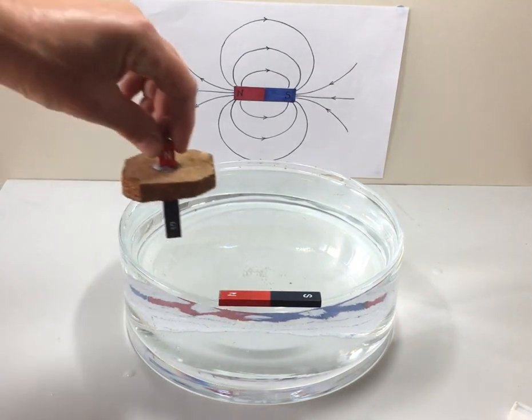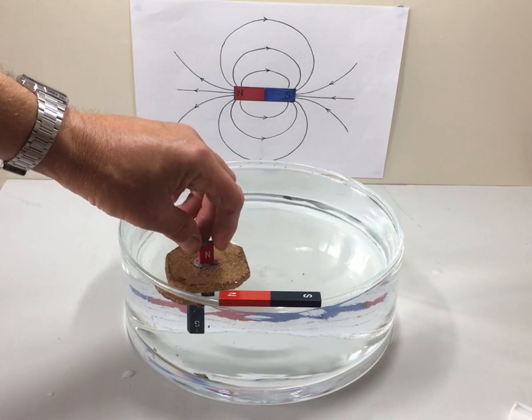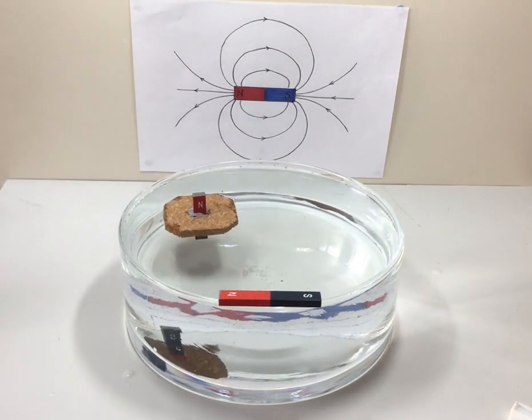If I place the floating magnet into the trough of water, into the field of the fixed magnet on the rim, and watch which way it moves.